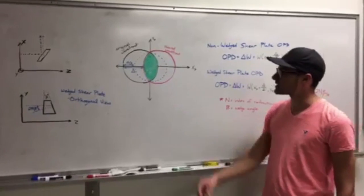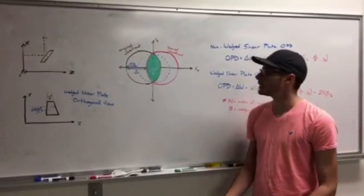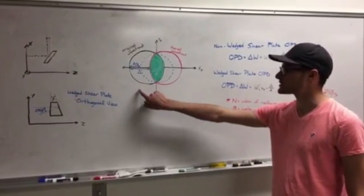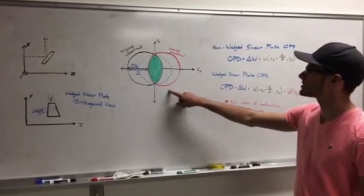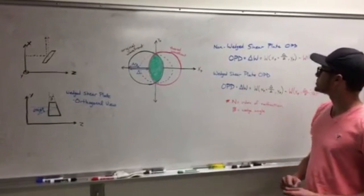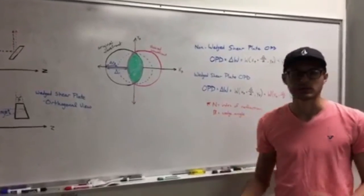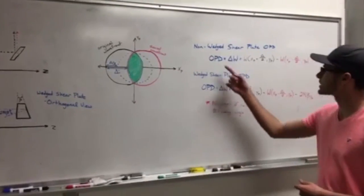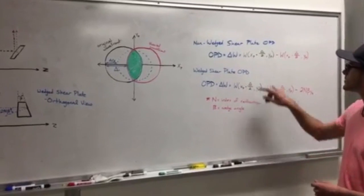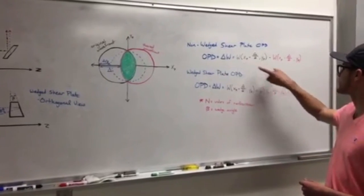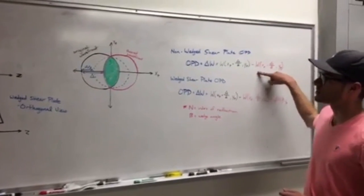This picture represents the target of the interferogram, where the black circle represents the original wavefront, and the red circle represents the sheared wavefront. For the non-wedged shear plate, this amount of distance here that represents the overlap is caused by this OPD, which is the first original wavefront minus the sheared wavefront.